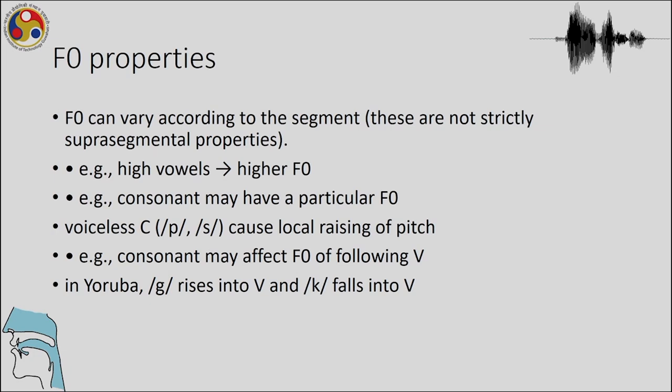Fundamental frequency may be affected by various linguistic factors and can differ by language - for example, average Japanese fundamental frequency is higher than that of English. F0 can also vary according to the segment: high vowels have high fundamental frequency, and consonants may have particular F0 depending on whether they are voiceless or voiced. Voiceless consonants cause local pitch raising, and consonants may affect the frequency of following vowels - as in Yoruba, where 'ga' rises into a vowel but 'ga' falls into a vowel with voiced versus voiceless consonants.